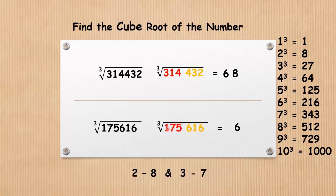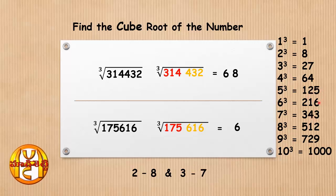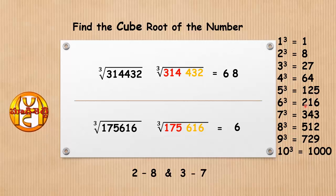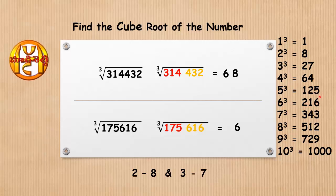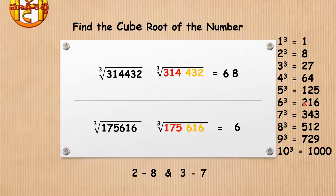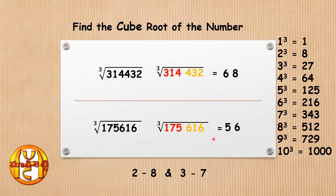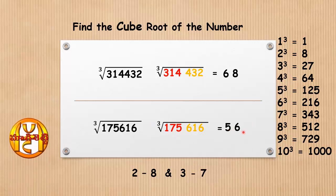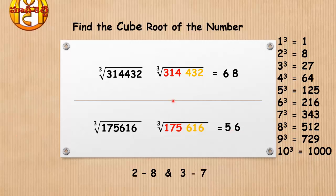After that, take the second group formed by the digits 175. Clearly 175 lies between 125 and 216, which are the cube values of 5 and 6. The least value is 5 cube, so we put 5 here. The cube root is 56.